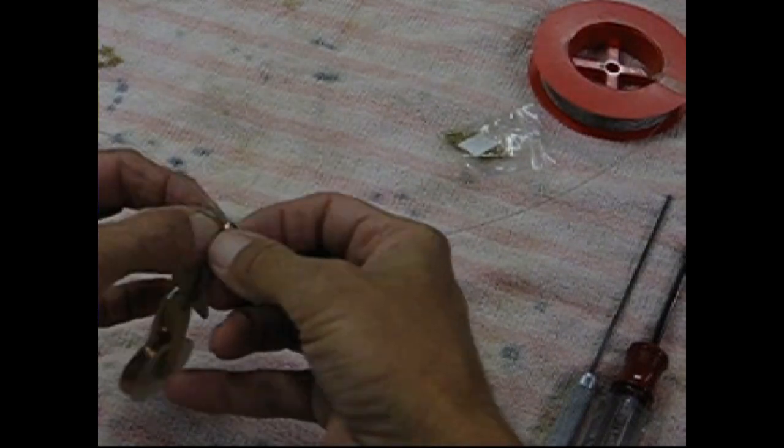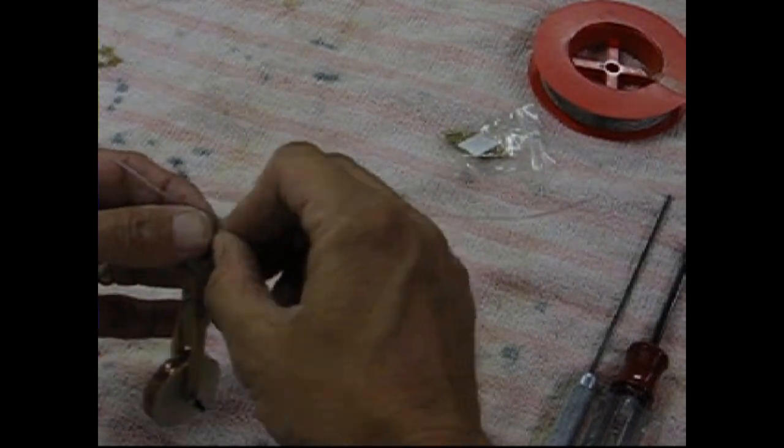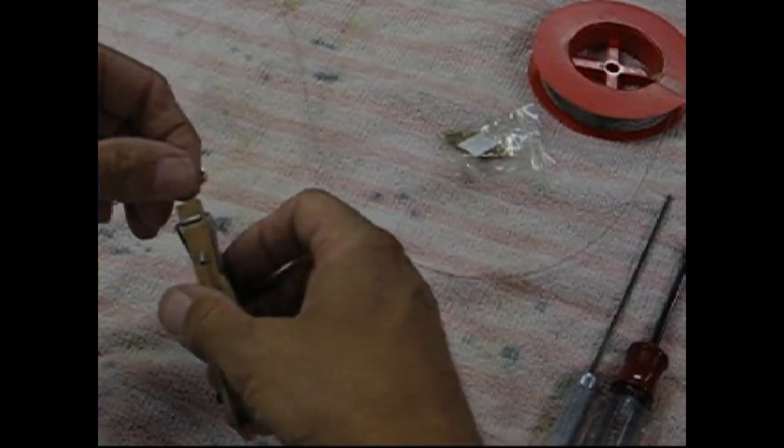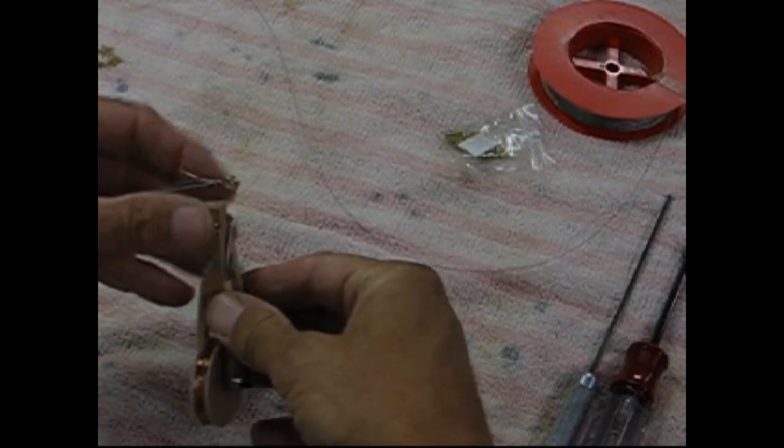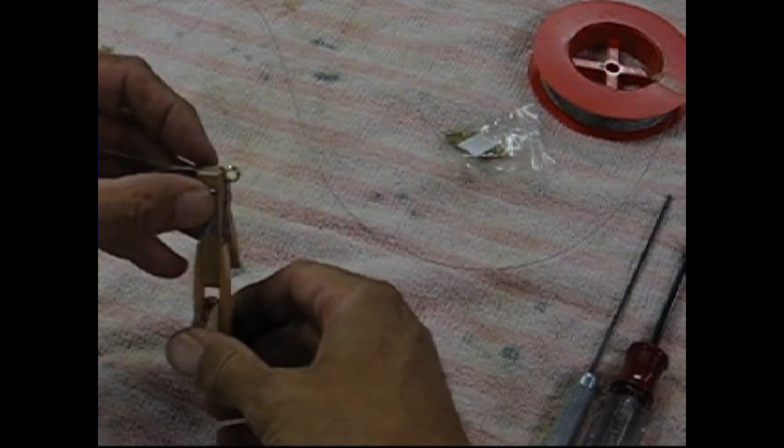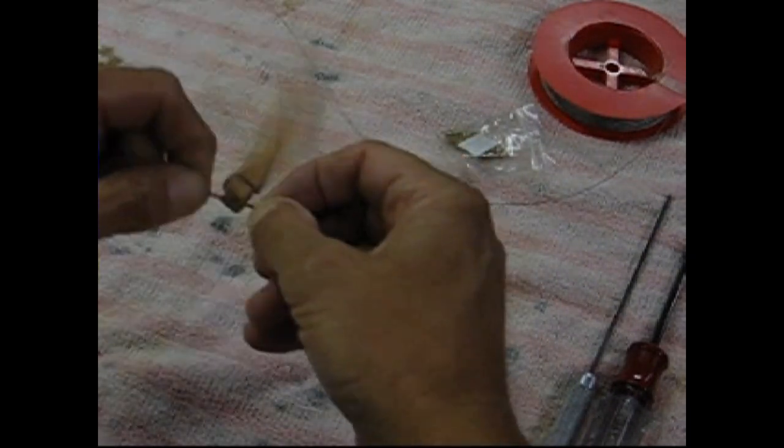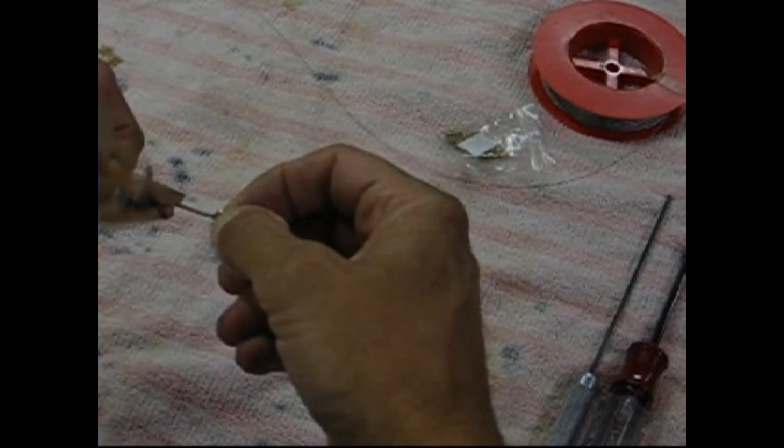Then we start a couple wraps around there by hand. Maybe kind of untangle this.